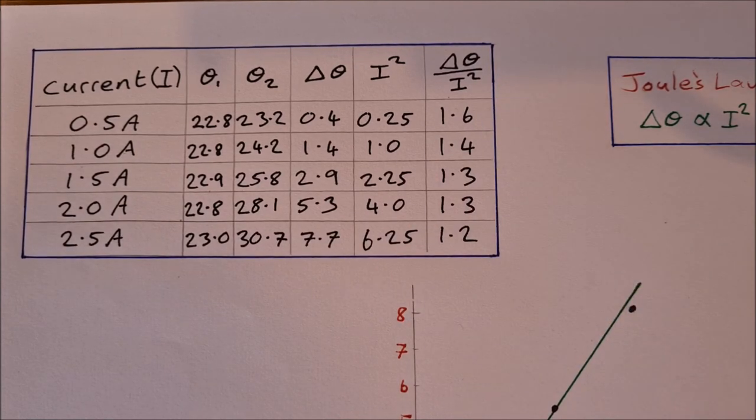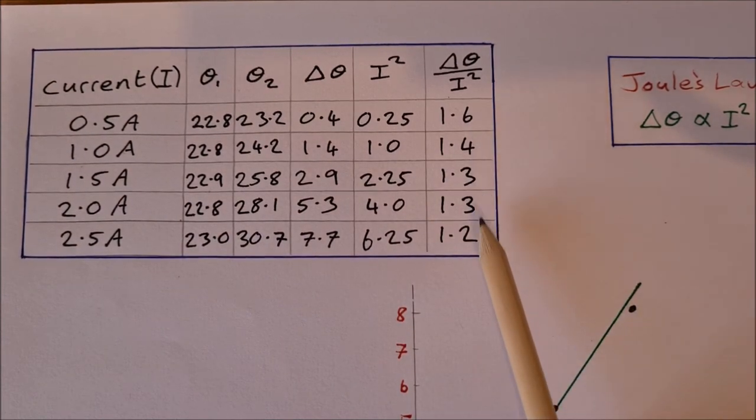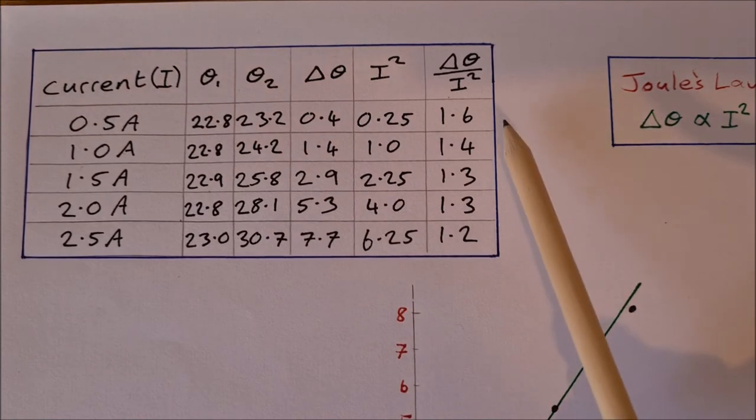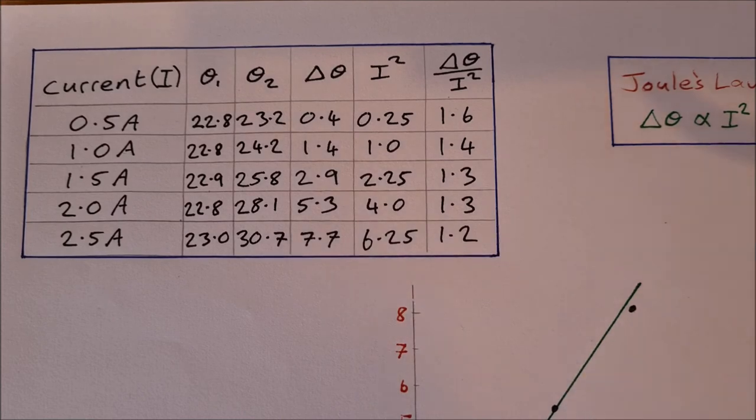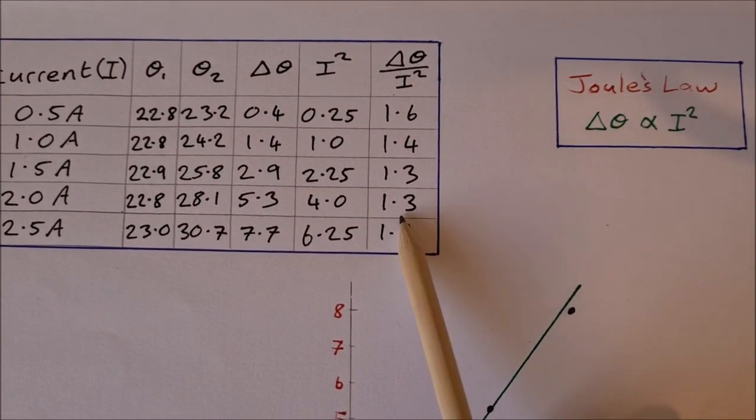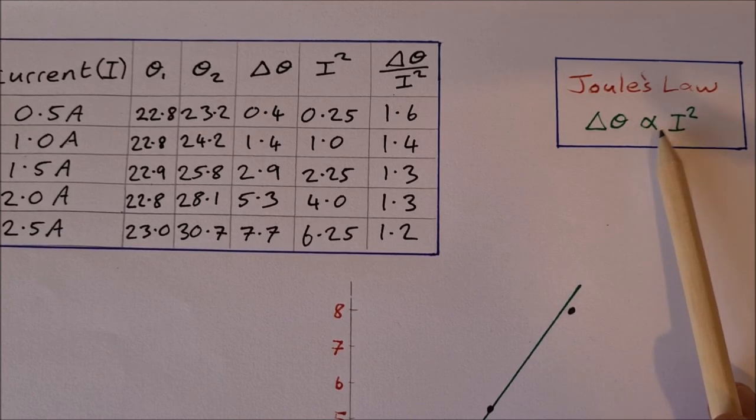So to verify Joule's Law, this column here, in a perfect world, this would be constant. It would all be the exact same. Within the limits of experimental error though, the difference here between 1.6 and 1.2 is just fine. So the fact that they are very close together verifies Joule's Law, which is delta theta is proportional to I squared.